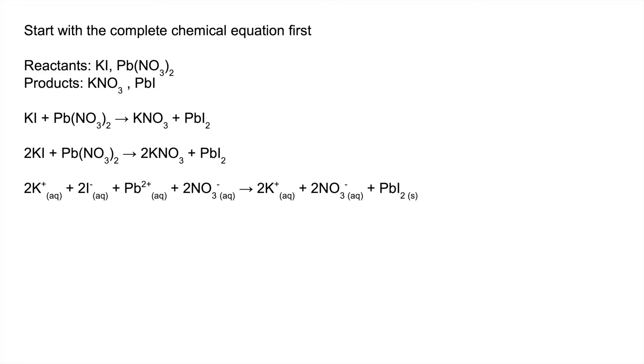So now the next step to get the net ionic equation is going to be to remove the spectator ions, the ions that appear on both sides of the equation. So those are the potassium ion and the nitrate ions. So we are going to get rid of those and end up with 2I- plus Pb2+ becomes PbI2 solid.